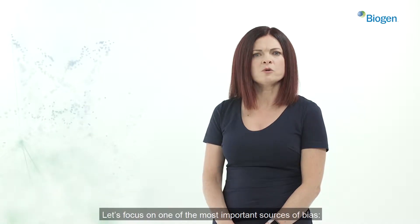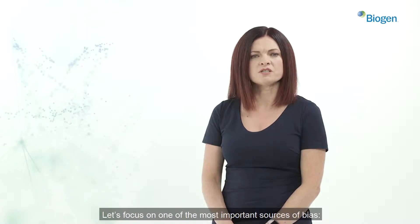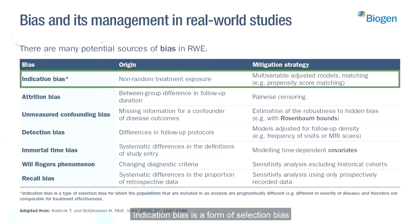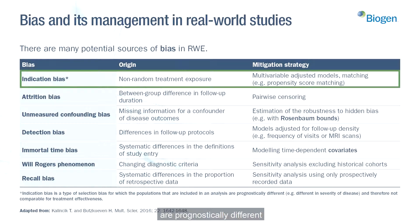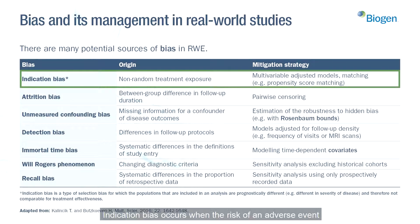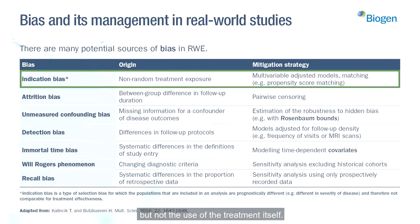Let's focus on one of the most important sources of bias: indication bias. Indication bias is a form of selection bias for which the populations included in analysis are prognostically different and therefore not comparable for treatment effectiveness. Indication bias occurs when the risk of an adverse event is related to the indication for a treatment but not the use of the treatment itself.